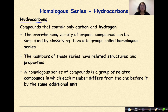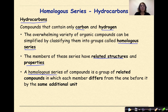A hydrocarbon is a compound that contains only carbon and hydrogen. The overwhelming variety of organic compounds can be simplified by classifying them into groups called the homologous series. The members of these series have related structures and properties — in other words, they're similar to one another. A homologous series is a group of related compounds in which each member differs from the one before it by the same additional unit — in this case, the adding of additional carbons.